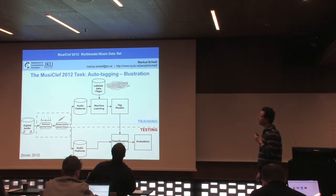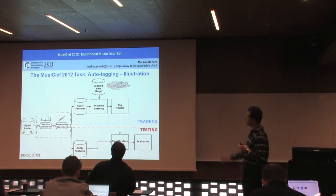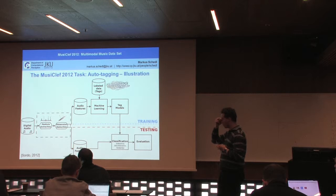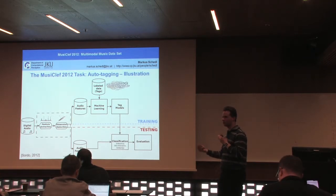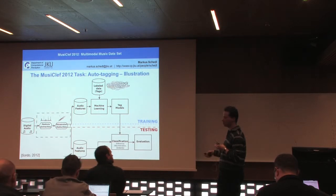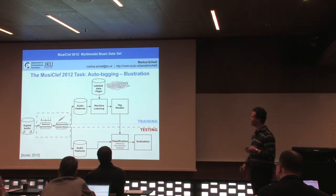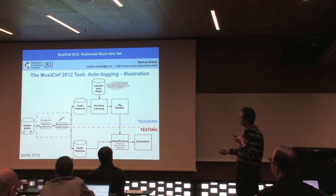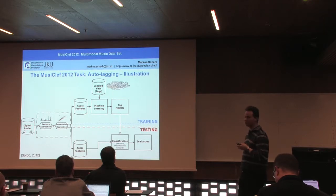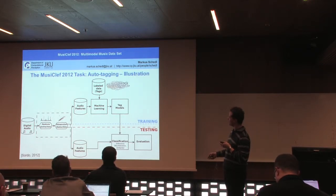Here's an illustration of what the task involves: it's an auto-tagging task. You are given digital audio input, possibly along with other multimedia items like collaborative tags or web pages. You perform feature extraction, sometimes followed by dimensionality reduction, to obtain audio features. You then train a machine learner of your choice using audio features and label tags to produce a tag model. In the testing phase you create audio features from the test set, apply the tag model for classification, and perform validation.